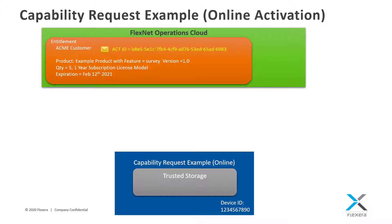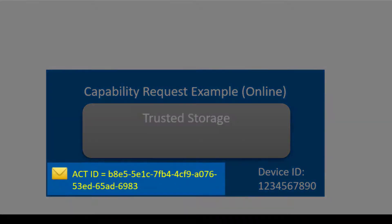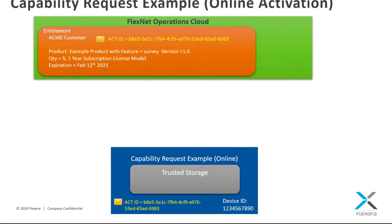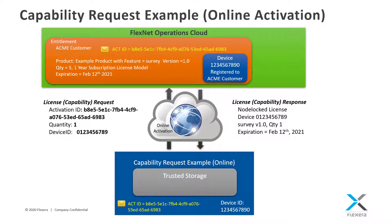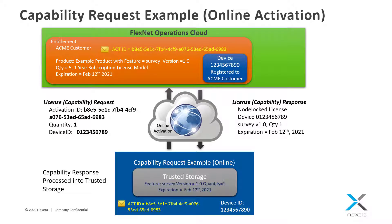As with the View example, trusted storage will first be created if it does not already exist. The Capability Request example will be configured to use the activation ID from the ACME customer entitlement to obtain a license. A capability request will be generated which will contain information such as the activation ID, device ID, and requested quantity. This capability request will be sent over the internet to FlexNet Operations, which will verify the activation ID and requested quantity are valid. If successful, it will register the device ID to the ACME customer account and return a capability response to the device.